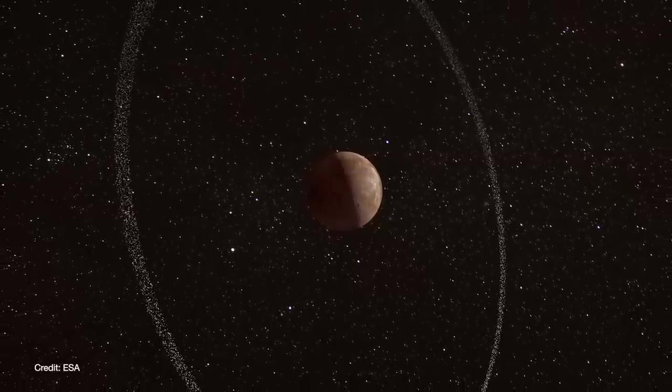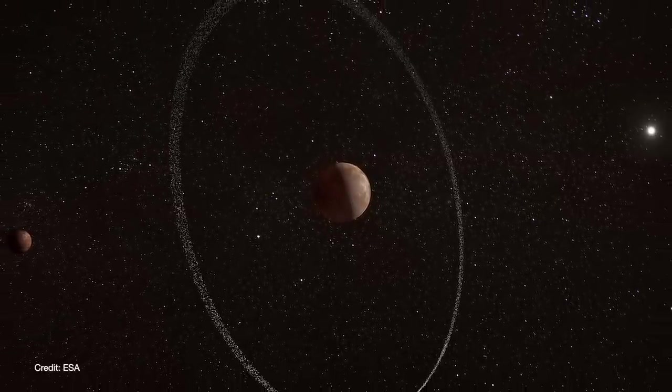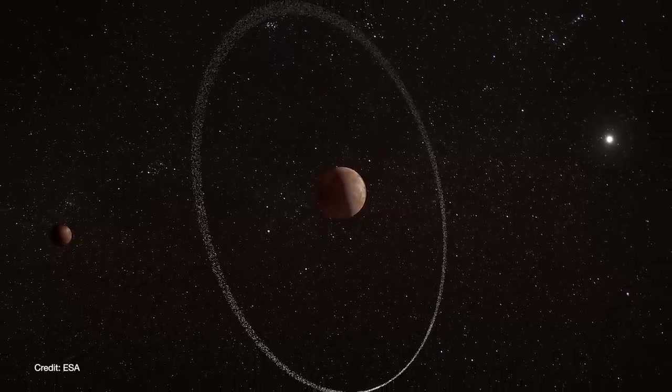But even then, Quaoar's ring system turns out to be really strange because it orbits way further out from its planet than was previously thought possible.